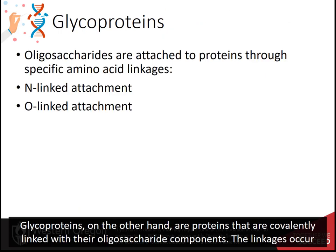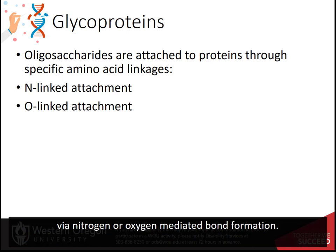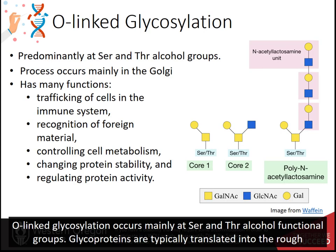Glycoproteins, on the other hand, are proteins that are covalently linked with their oligosaccharide components. The linkages occur via nitrogen or oxygen-mediated bond formation. O-linked glycosylation occurs mainly at serine and threonine alcohol functional groups.